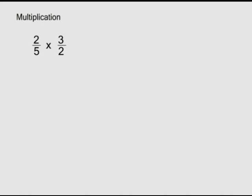Multiplying fractions: when we multiply a fraction with another, we multiply the numerators and denominators separately. So two over five times three over two: we have two times three over five times two, giving us six over ten. Simplified, that is three over five.